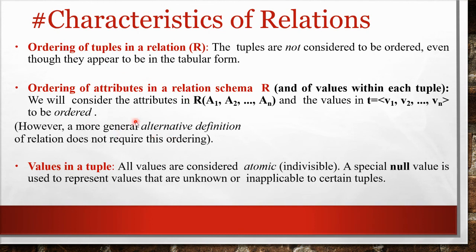The output of a query can be ordered by any attribute. Regarding values in a tuple: each field of the table should contain an atomic value, meaning every field must have an individual, indivisible value. A special null value can be used to represent values that are unknown — if no value exists for a particular field, we assign null. In summary, we cannot impose ordering on rows or attributes during implementation, but we can order the results of queries.